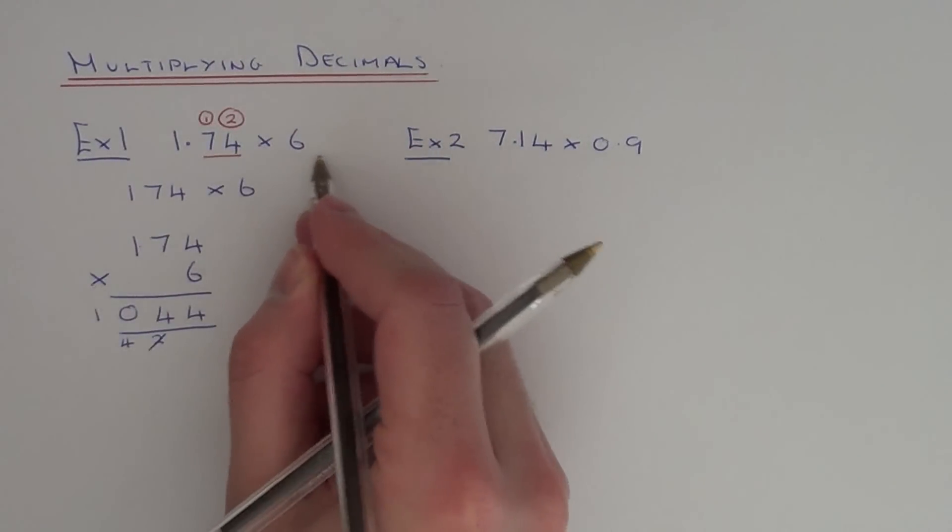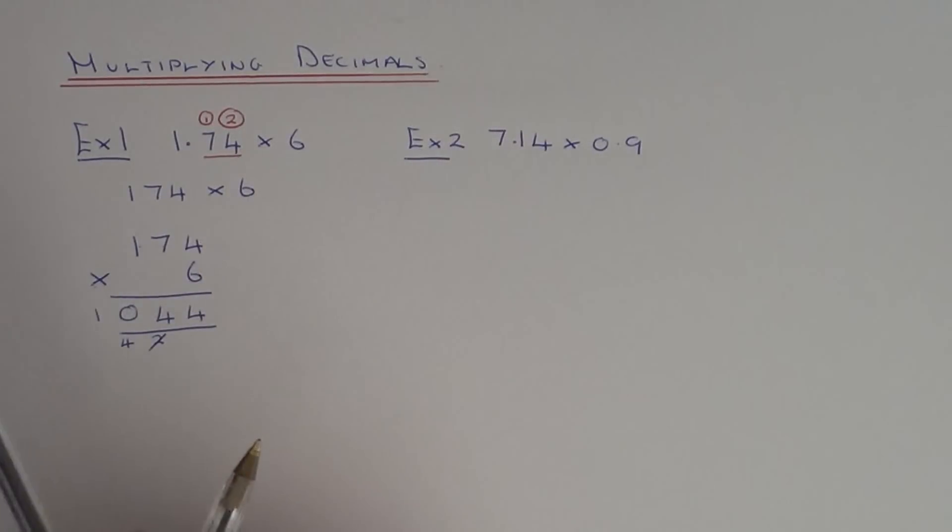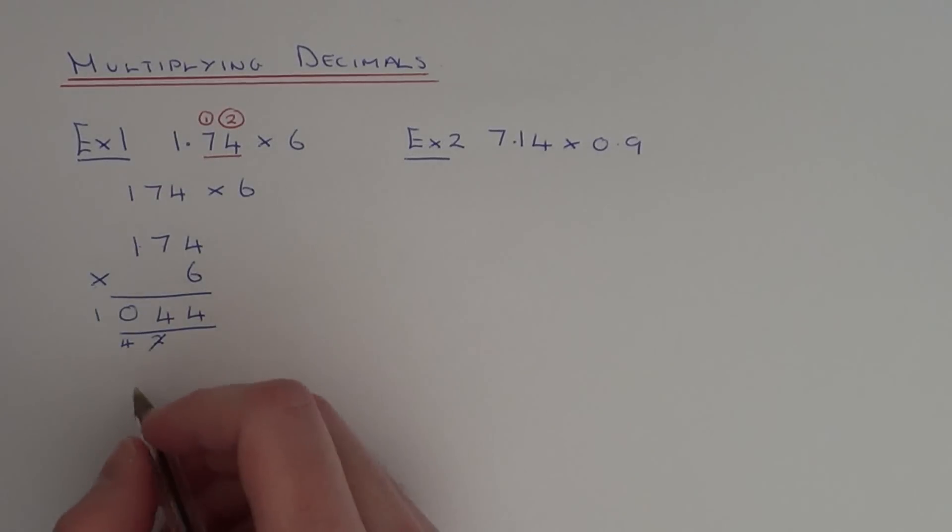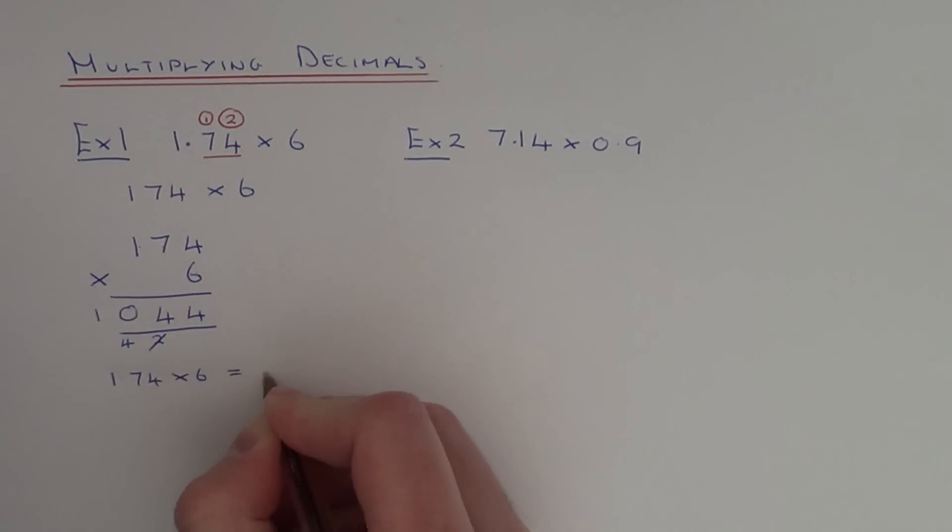There's no numbers after the decimal point in this number. So in our answer, there will be two numbers after the decimal point. So 1.74 times 6 will be 10.44.